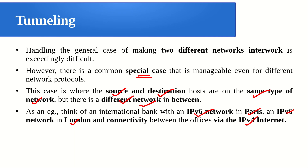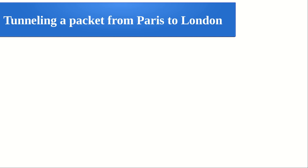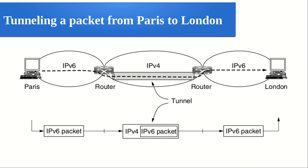The solution to this problem is a technique called tunneling. We can see this with our example: the machine located in Paris is trying to communicate with another one in London. Both are on the same IPv6 network, so we can go for tunneling because in between we have a different network — IPv4.